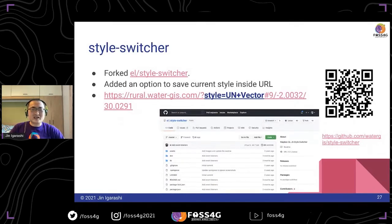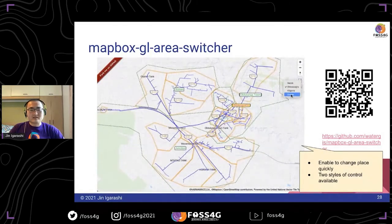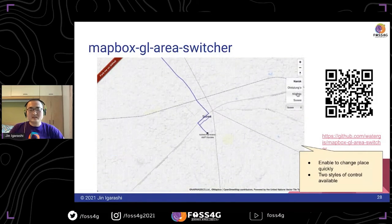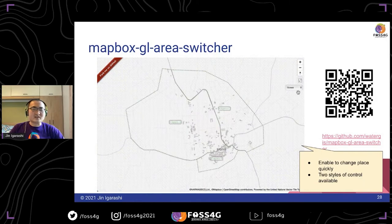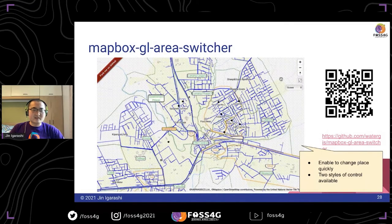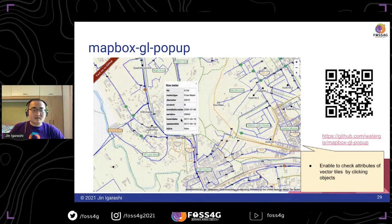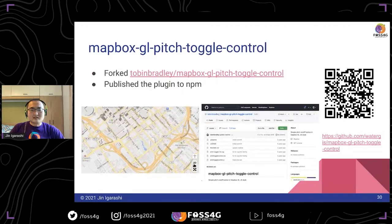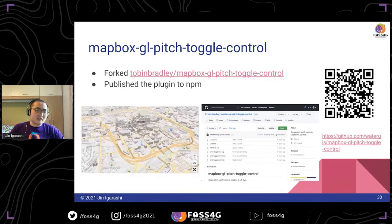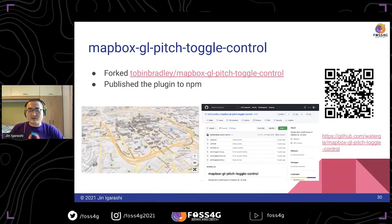This is the style switcher plugin. I hooked the original plugin and added a new feature to save the current style inside the URL, so water utility staff can share a URL with coordinates and the selected style. The area switcher plugin easily switches between places quickly — this is very useful if water utilities manage systems in different locations. The popup plugin lets users see the attributes of each feature. The original plugin was not hosted on NPM, so I hooked it and published it to NPM.